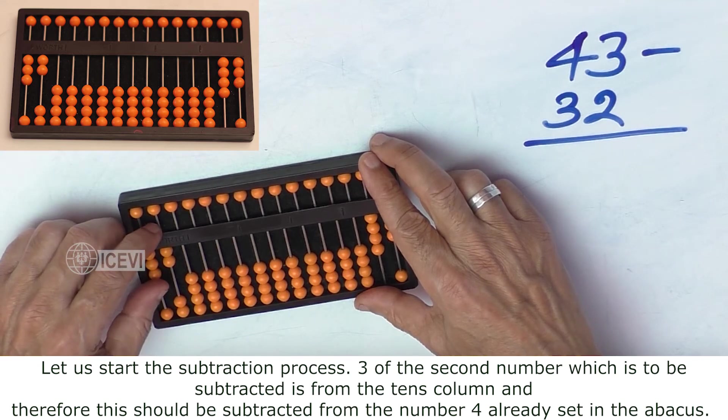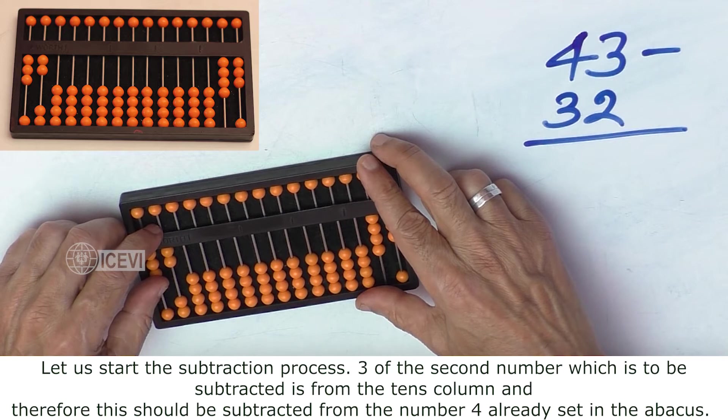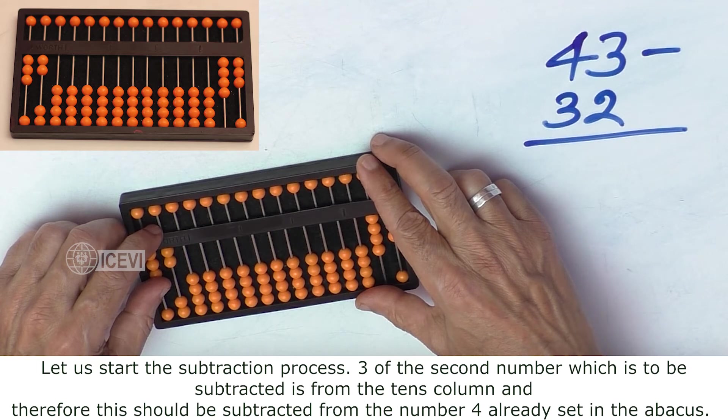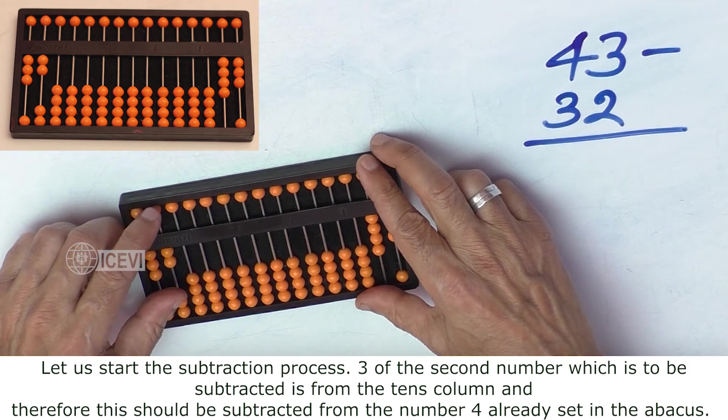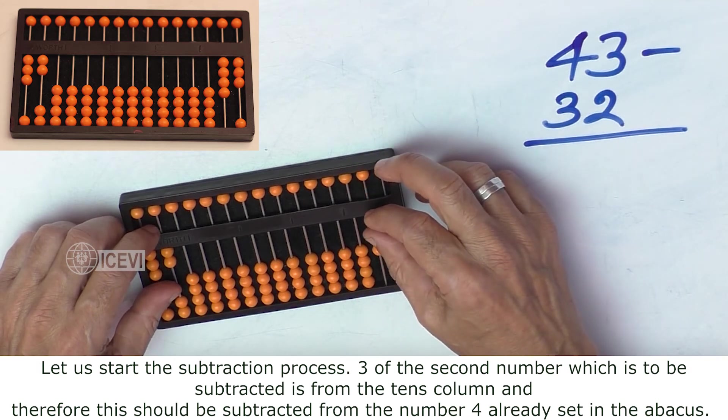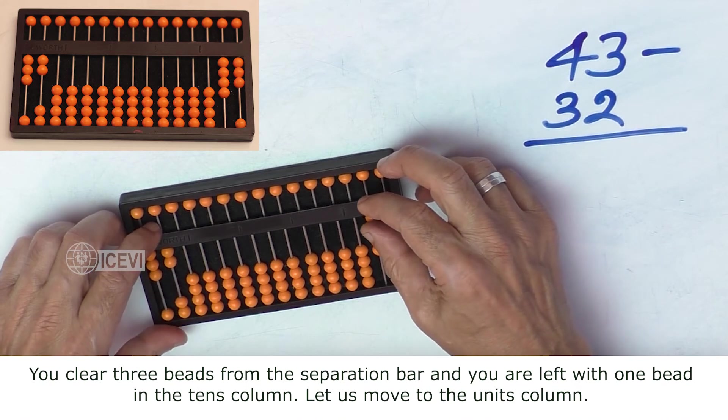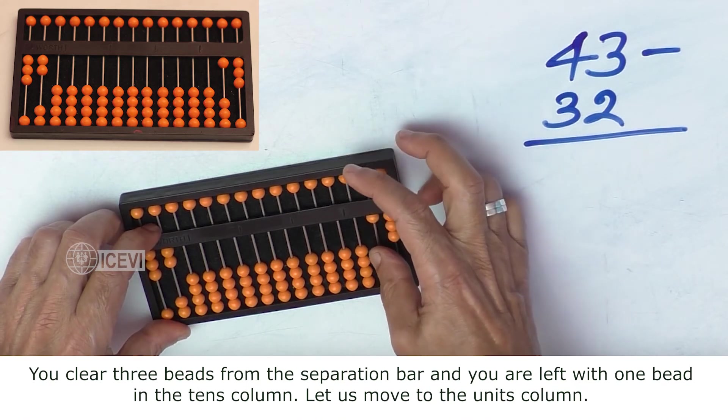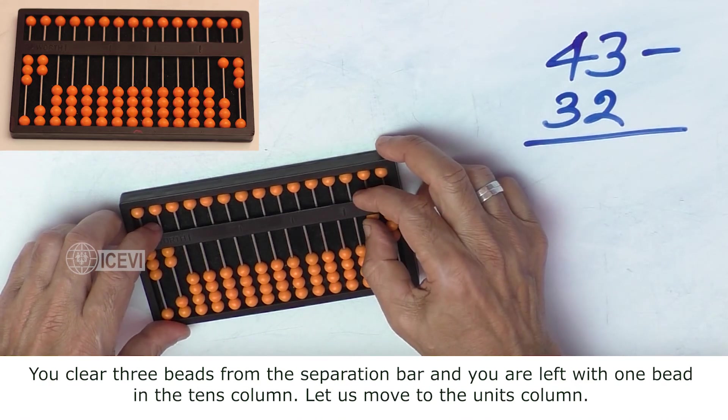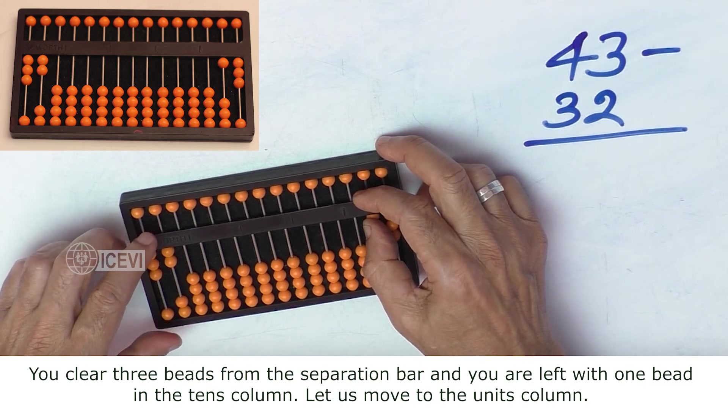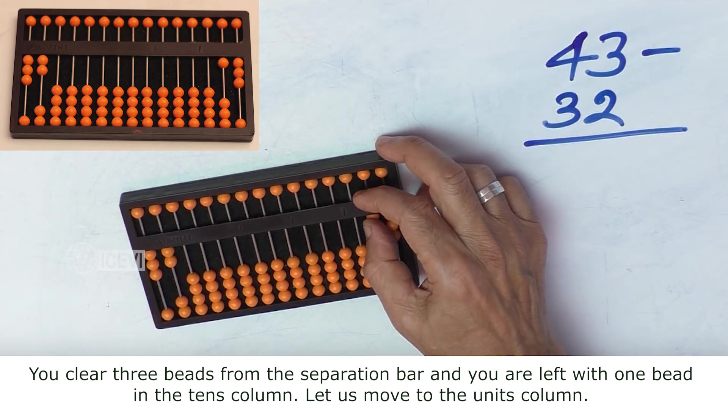Let us start the subtraction process now. Now, 3 of the second number which is to be subtracted is from the tens column and therefore, this should be subtracted from the number 4 already set in the Abacus. That means you clear 3 from that column and you are left with 1 bead in the tens column.